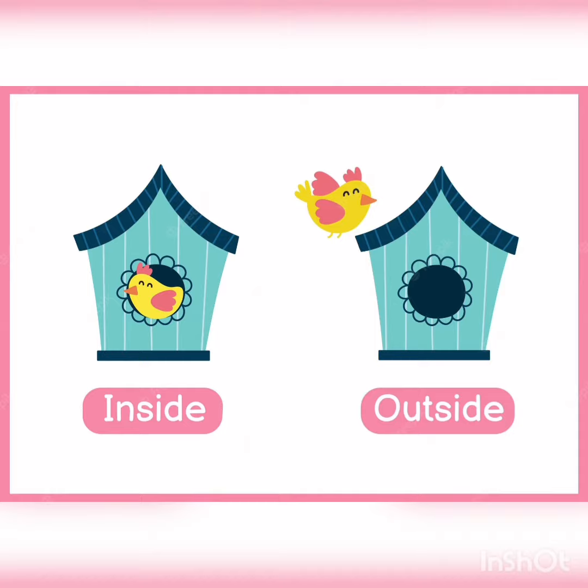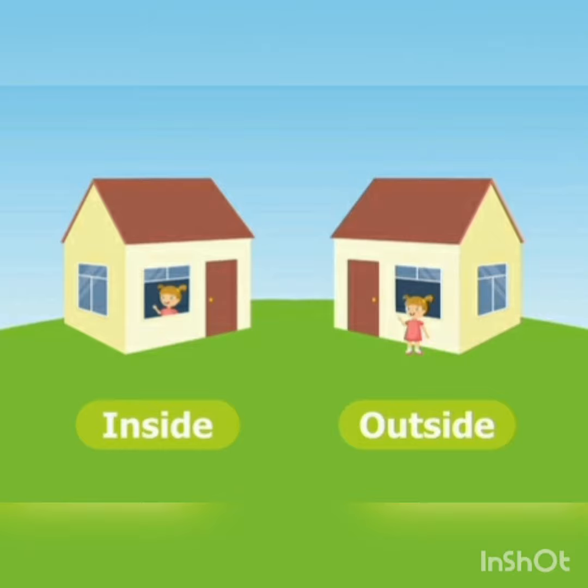The next concept is inside and outside. Inside and outside is based on the position of a thing. If the thing is in, then it is inside, and things which are out are outside. Hope you all understood these concepts. Thank you very much!